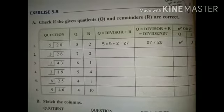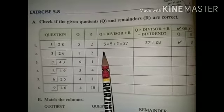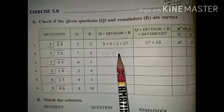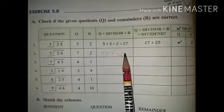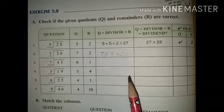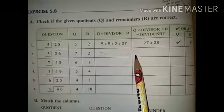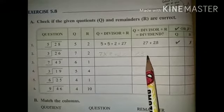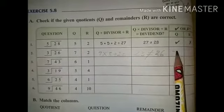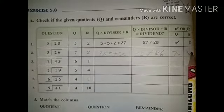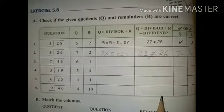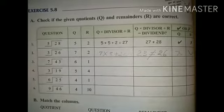So here we write: quotient is 7, multiplied by divisor 3, plus remainder 2 gives 21 plus 2 equals 23. But the dividend is 26, and 23 does not equal 26, so the quotient in this question is wrong and the remainder is right. In the same way, you need to solve all the remaining questions and complete this column. This is your book work.